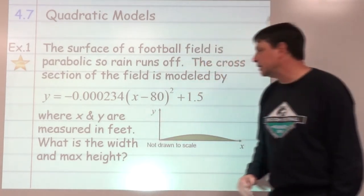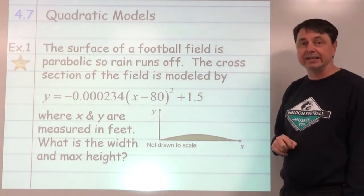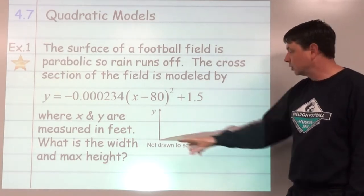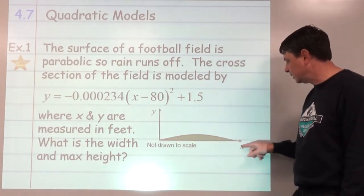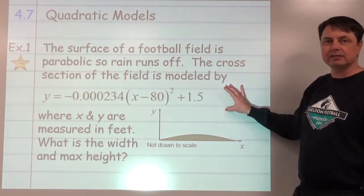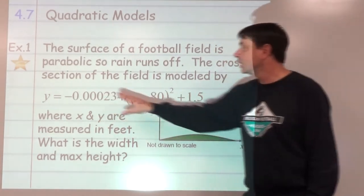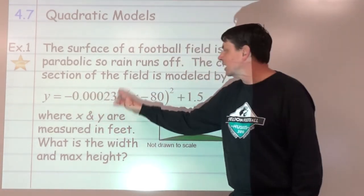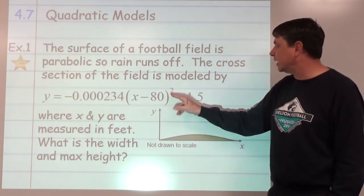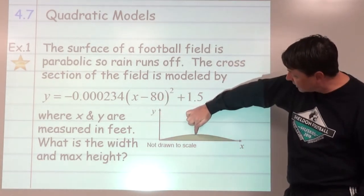What is the width of the field and the maximum height of the field? The equation is giving us the vertex because this is vertex form: y equals a times (x minus h) squared plus k. It's giving us the vertex which is the highest point at (80, 1.5).